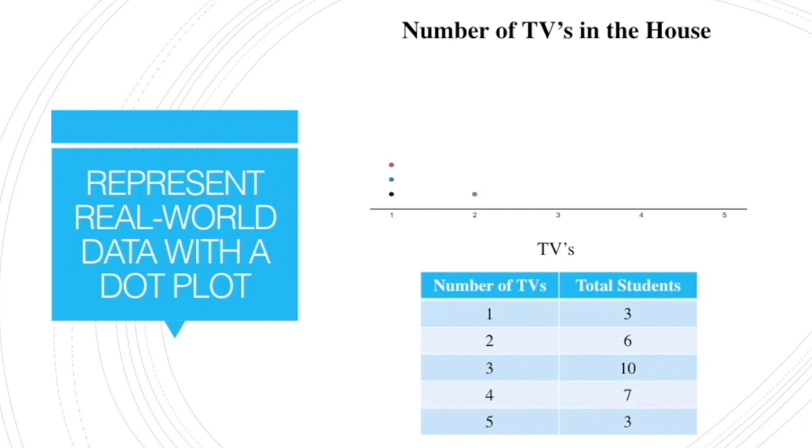I also had six students answer and say they had two TVs. So notice that I'm going to put right above two TVs, six dots, one for each student. Why? Because there were six students. One, two, three, four, five, and six that answered saying they had two TVs, which is what this represents. One dot per student.